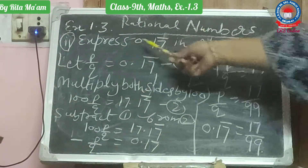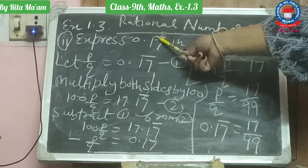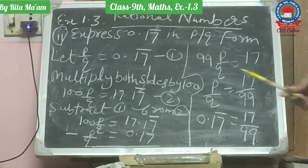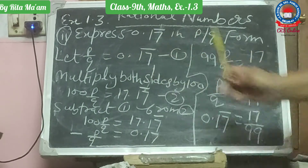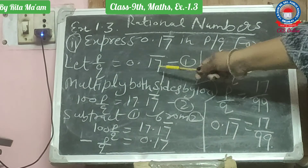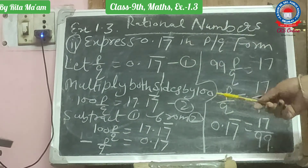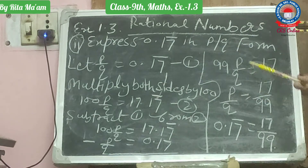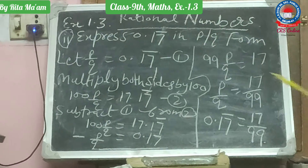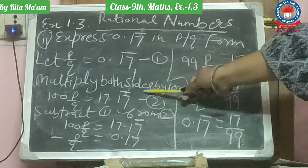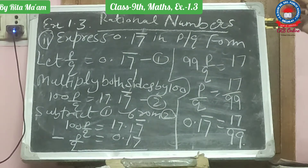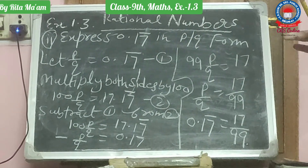Now I will tell you how a 2-digit repeating number can be expressed in P upon Q form. First of all, we will let P upon Q equal to 0.17 bar. This is equation number 1 again. Here 2 digits are repeating, so we will multiply both sides by 100. This is the main point: when 1 digit is repeating, multiply both sides by 10; when 2 digits are repeating, multiply by 100; when 3 digits are repeating, multiply by 1000.